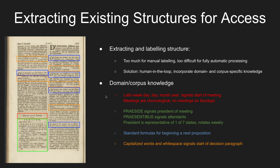Extracting this kind of structural information requires labeling. We could do it all manually, but that would require far too many resources. But doing it fully automatically also doesn't work — even if we fed it to a machine learning algorithm, the results would be relatively noisy and we would need a lot of manually annotated data. Our solution is to have a human-in-the-loop process where we can incorporate what we know about the domain and the corpus.